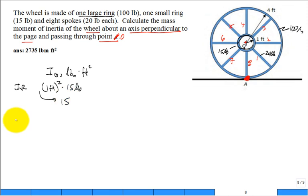Let's do each spoke. Let's do it about the center of the spoke, and that formula we used before, isn't it 1/12? The mass of the spoke, which is 20 pounds, times the length of the spoke squared. What is the length of the spoke from the data given? Three. Three squared. It's 15.